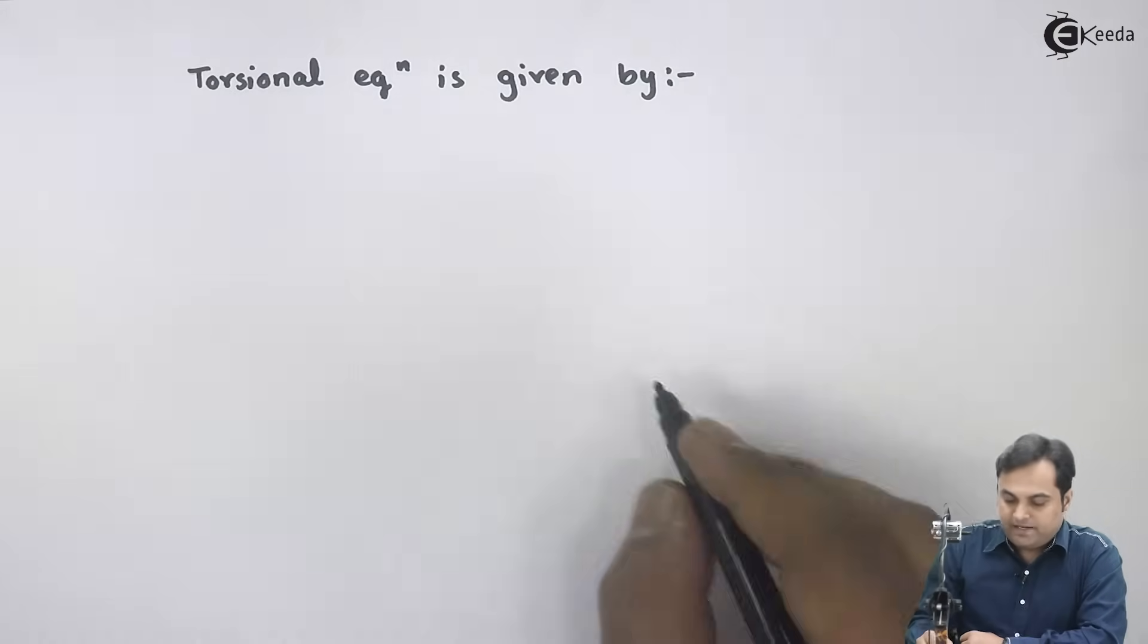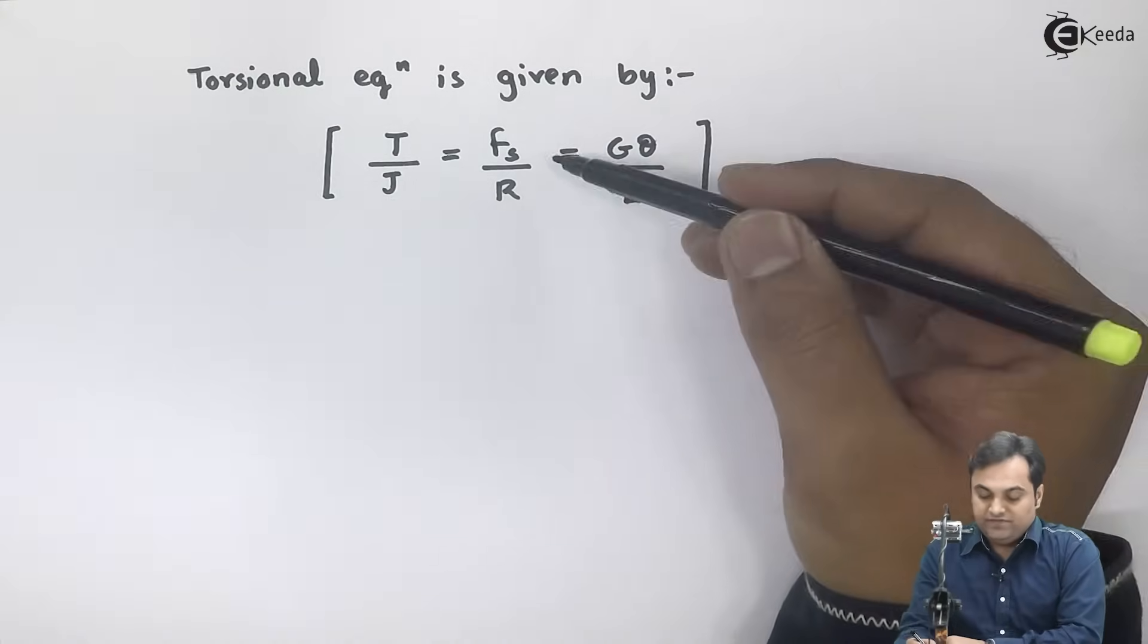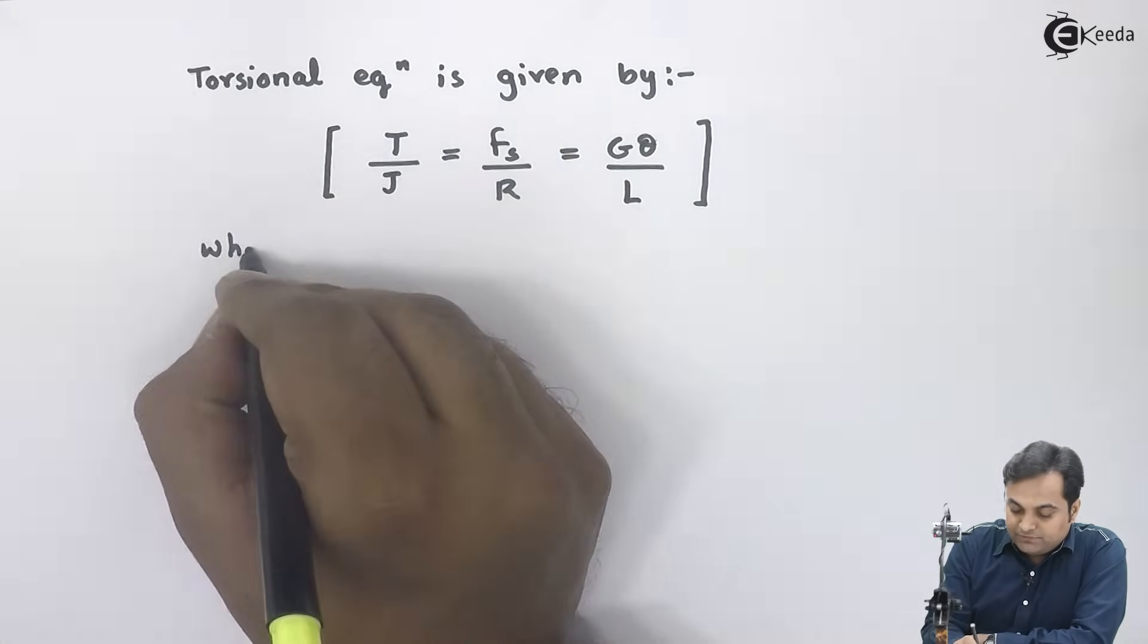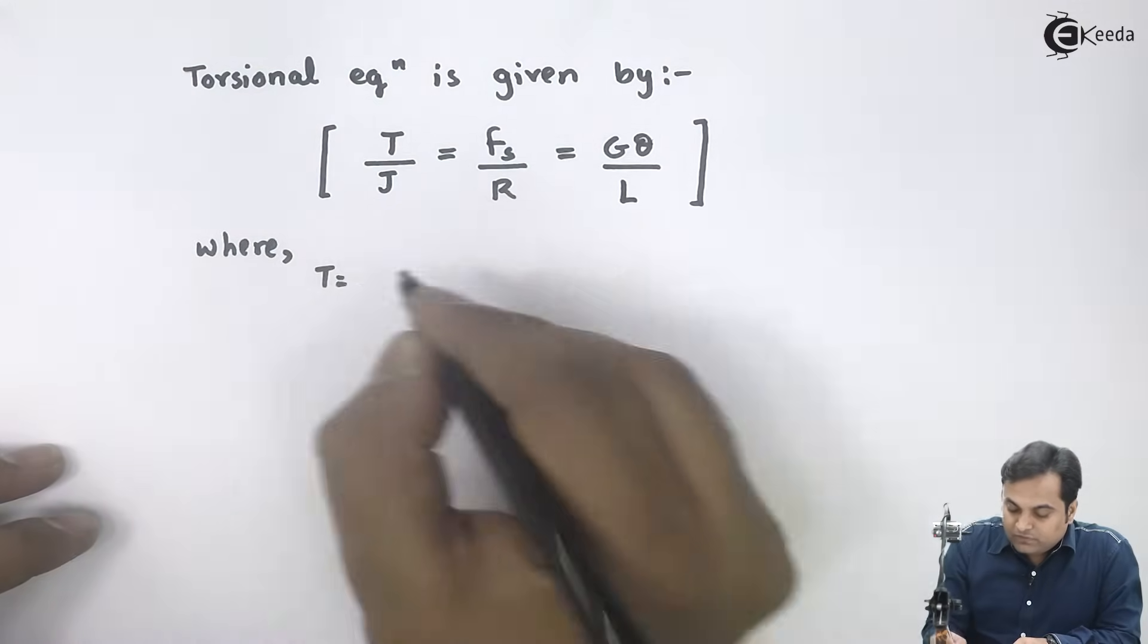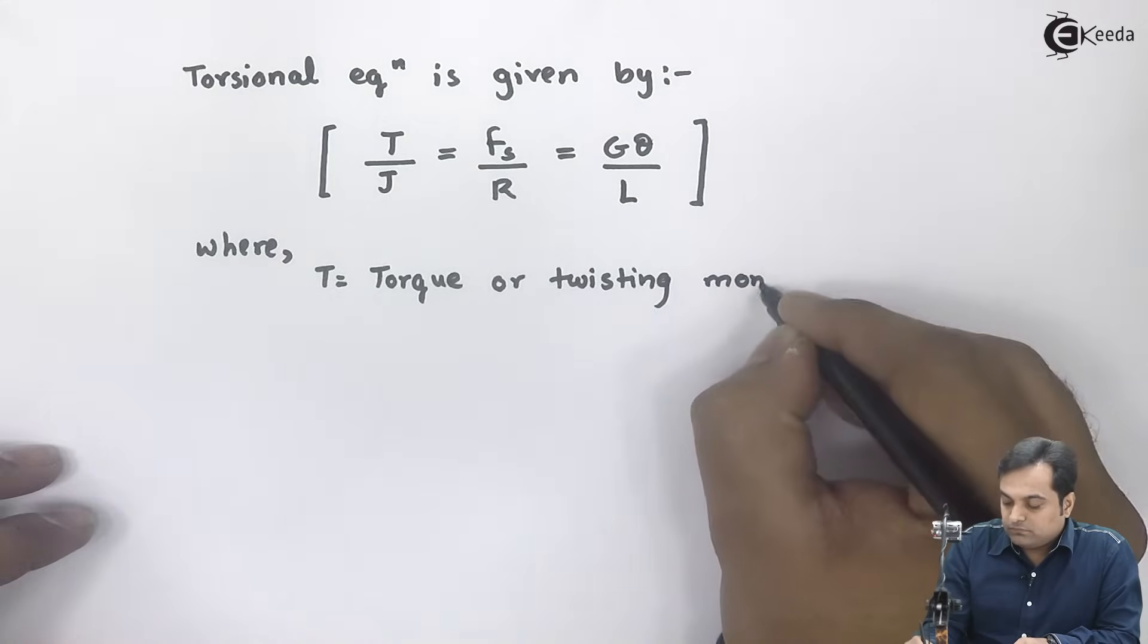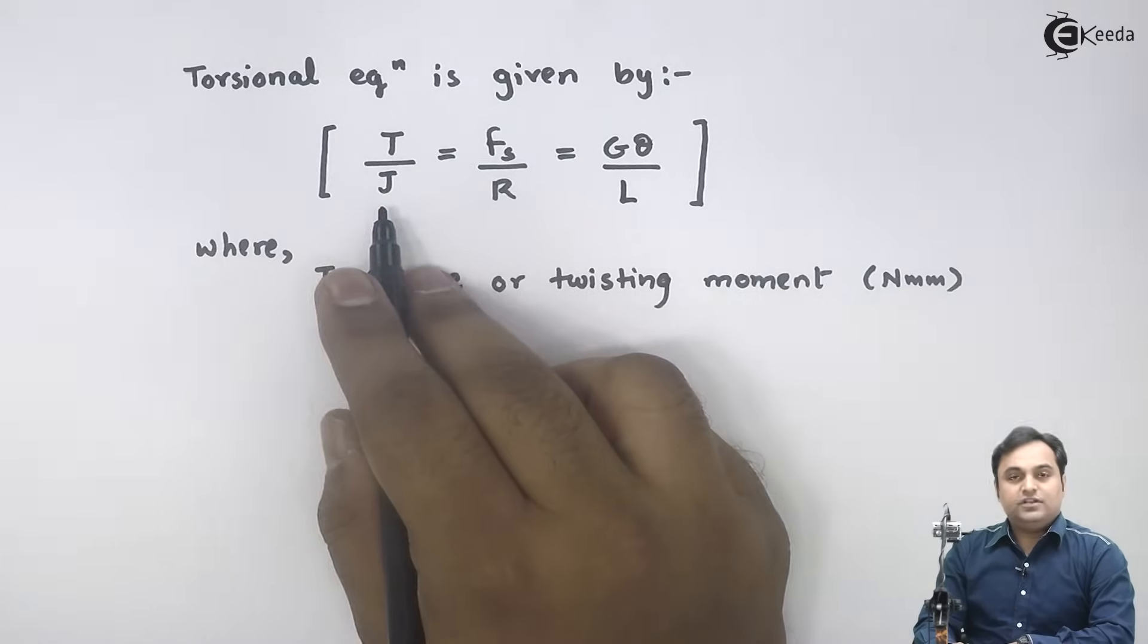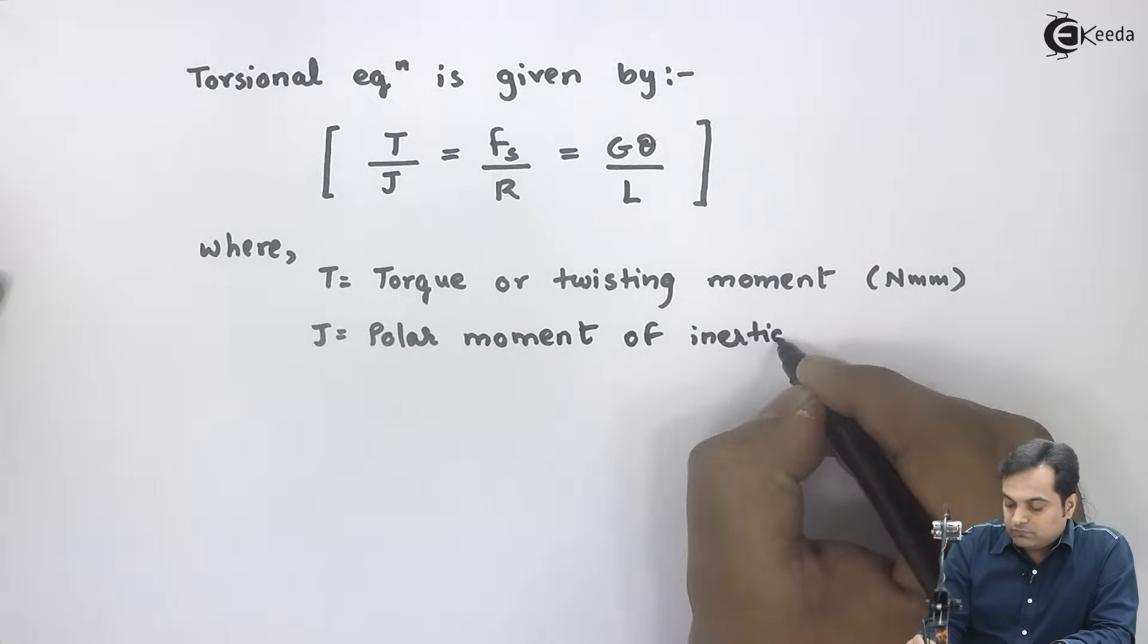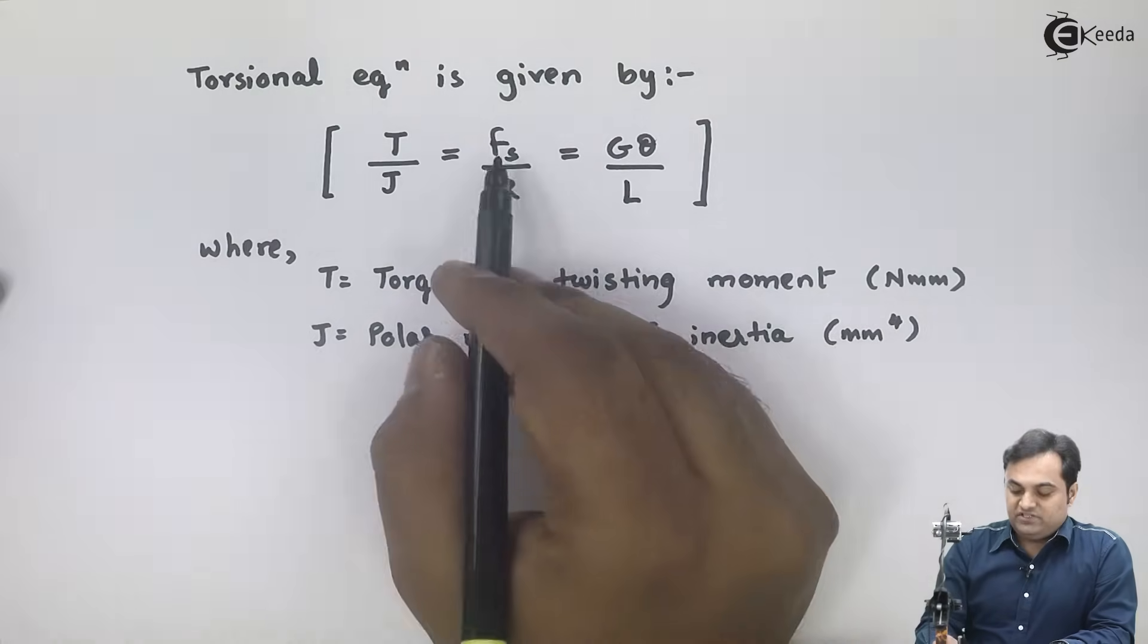The torsional equation is given by T/J = Fs/R = Gθ/L. Here I will be defining all the terms. Capital T is the torque or twisting moment, unit will be in Newton mm.